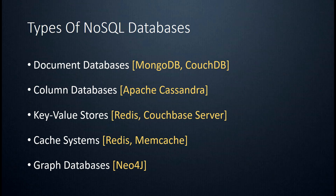Next we have graph databases, which aren't that common but are very interesting. The most popular is Neo4j, which I did a course on. Everything in a graph database is looked at as a node, and nodes can have relationships with other nodes through what's called an edge. These are used for huge datasets like social networks where everything is related.